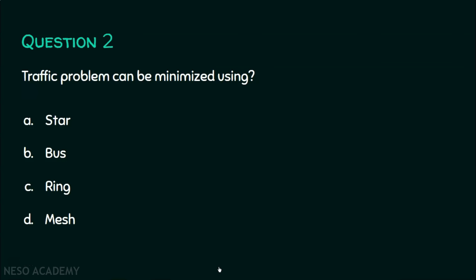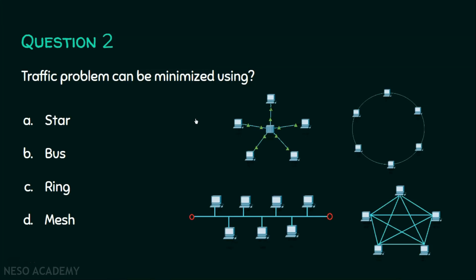Now we will move on to question number two. Traffic problems can be minimized using: A) star, B) bus, C) ring, or D) mesh topology. We have to identify in which topology there is minimal traffic. The four options shown are a star topology, a bus topology, a ring topology, and a mesh topology.